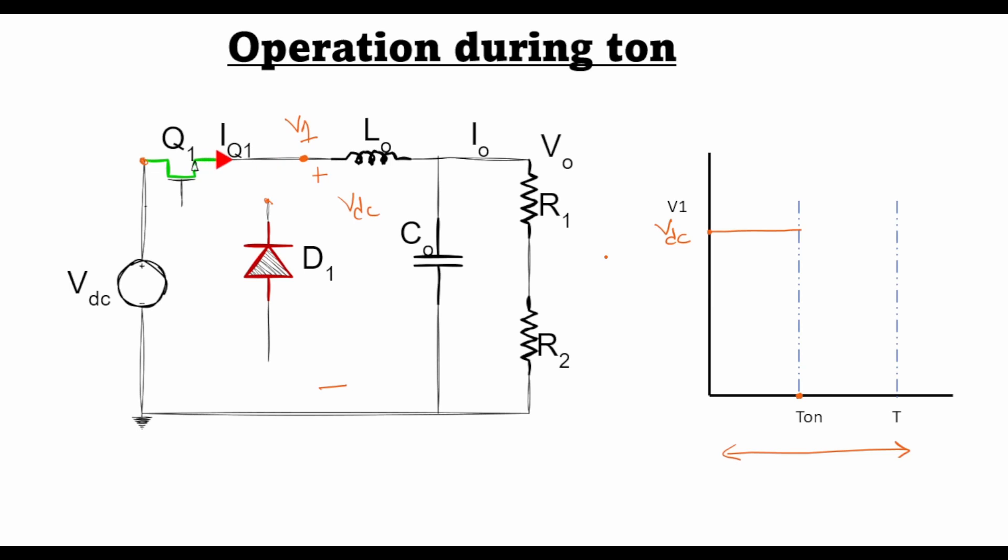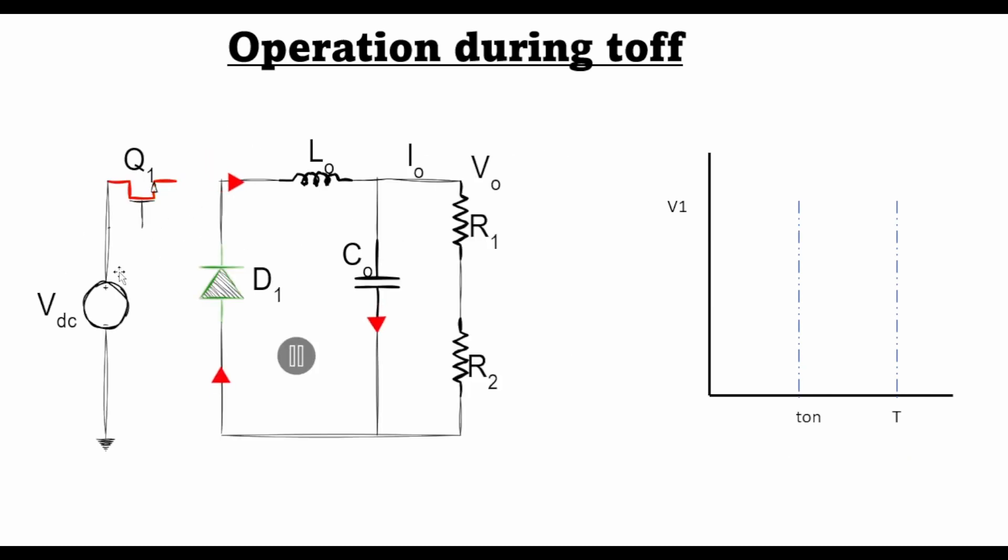Let's see what happens when the transistor is turned off. So during t_off, we can assume that the transistor is an open circuit, so the supply is no longer connected to this point which is V1. But as we know that an inductor cannot change its current instantaneously, so the current must continue to flow in this direction, which was already flowing before the transistor turned off.